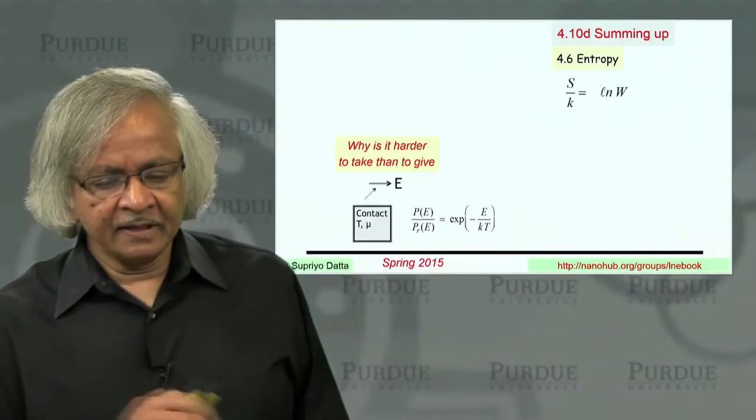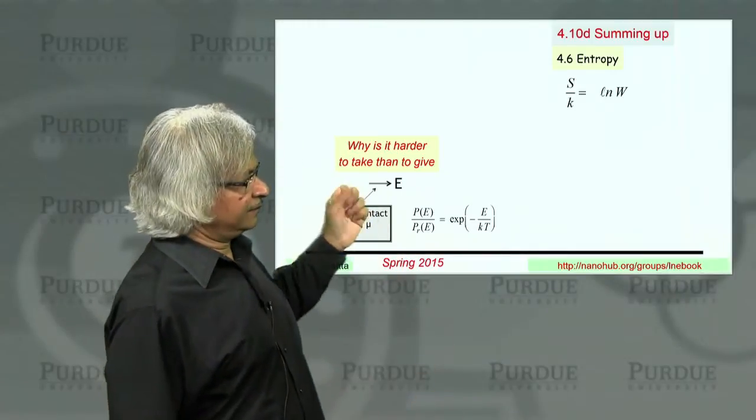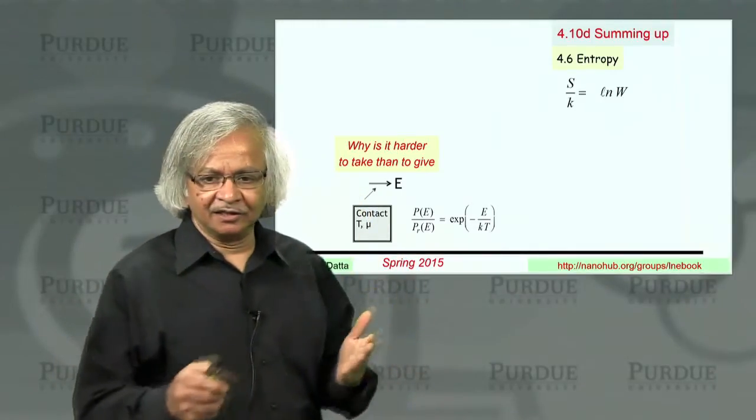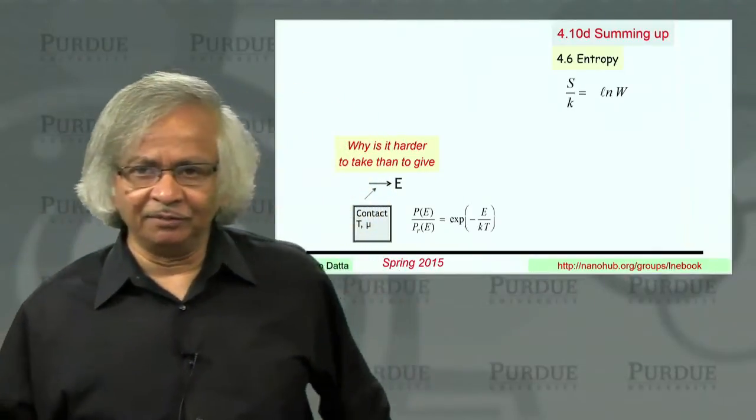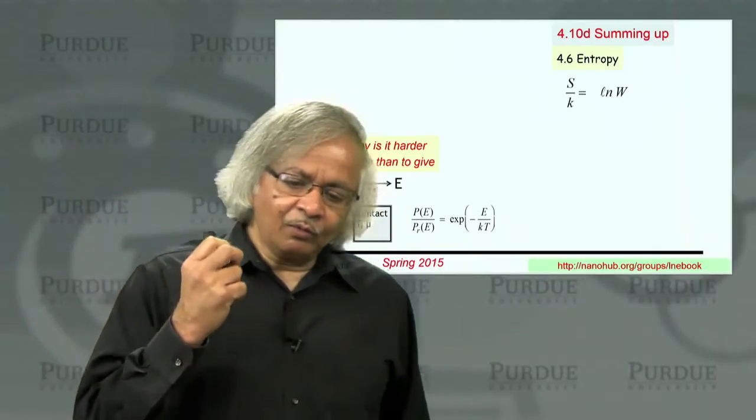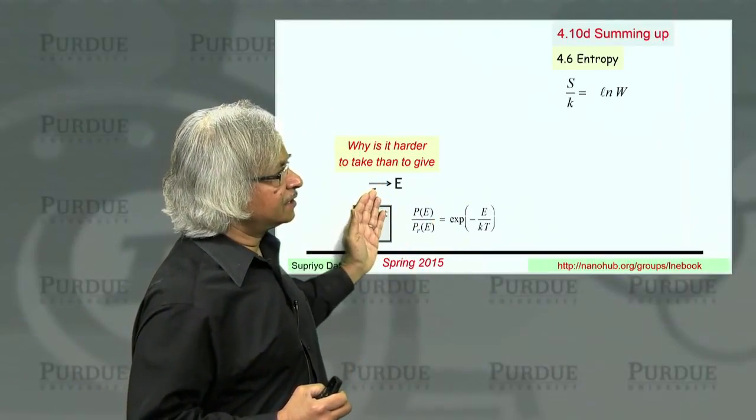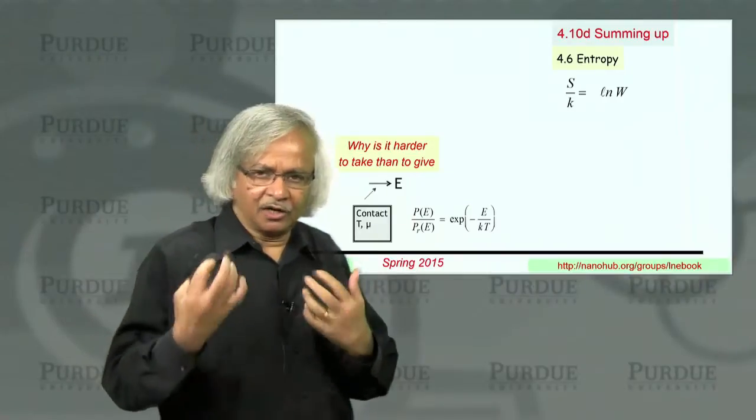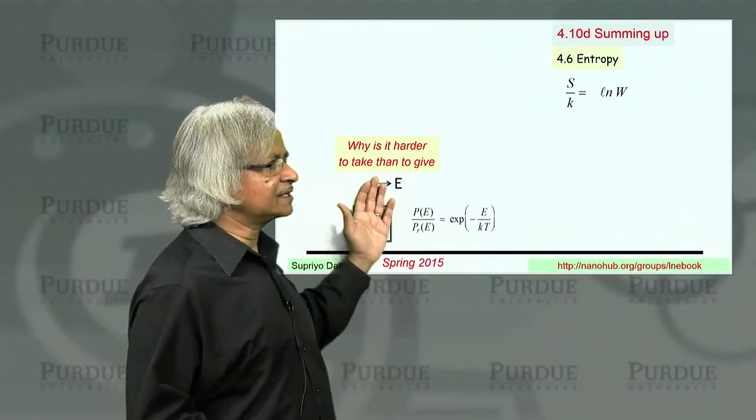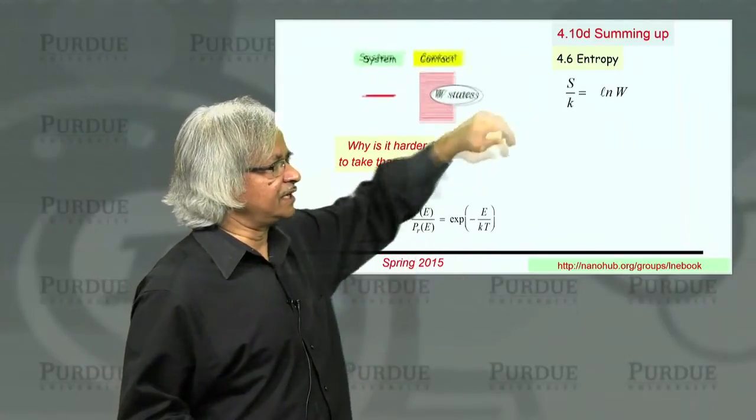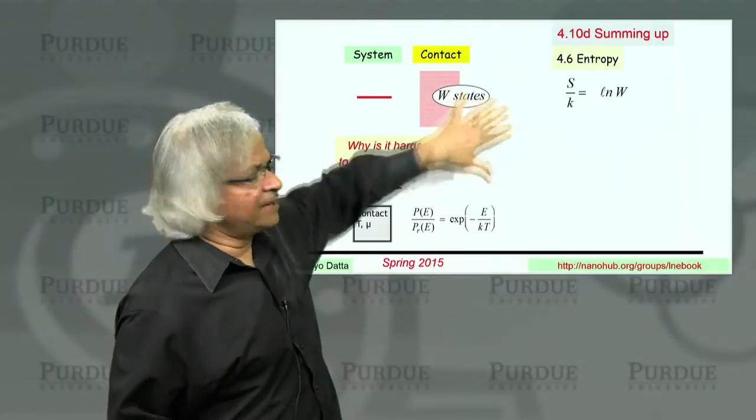And I kind of want to stress this point that this law really came from a property of the contact because often people say, well, how can you apply this law to a small system because it's a statistical law? Well, the point is it doesn't matter if the system is small, big, complicated, simple, it doesn't matter. This expresses a property of the contact. It's the contacts that need to be large and simple. Now, in terms of understanding this basic property, this basic property that governs all these deep things, second law, law of equilibrium, et cetera, what really governs the basic property is that it is much harder to absorb energy from the contact than to give energy to it. And where does that come from? Well, that's what is kind of expressed in terms of this idea of entropy, the idea that the contact has many states.